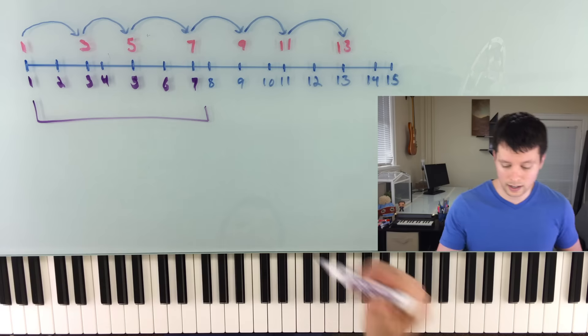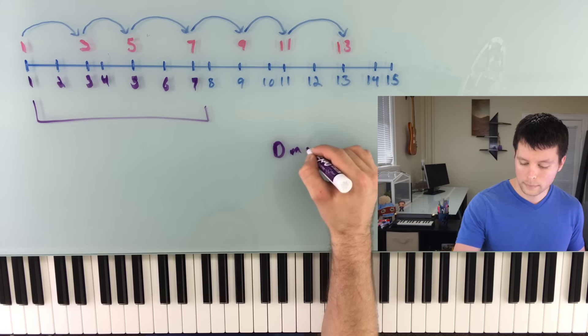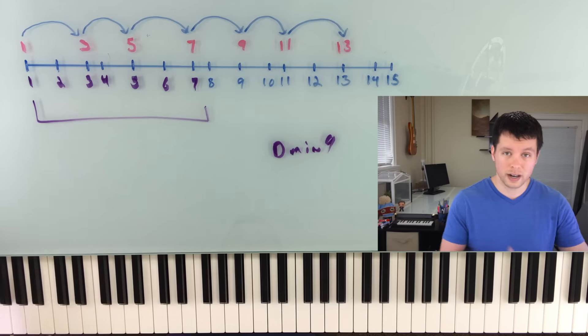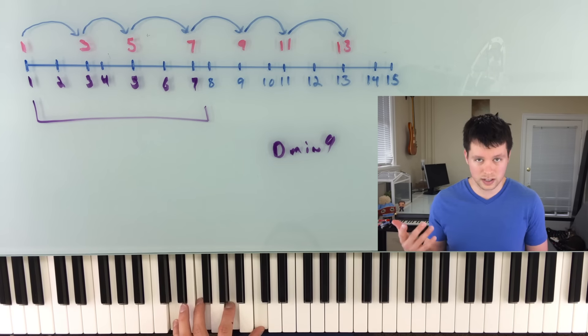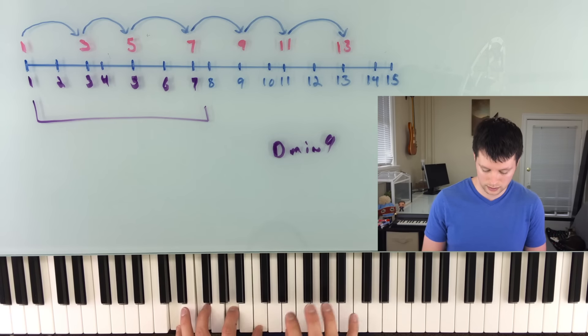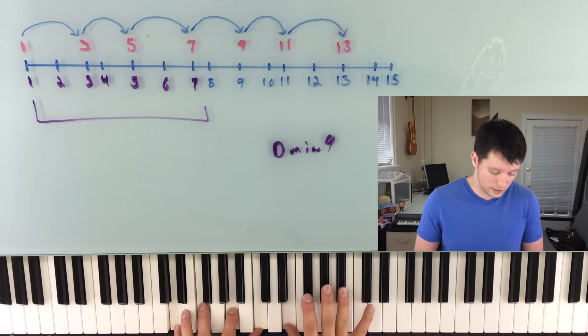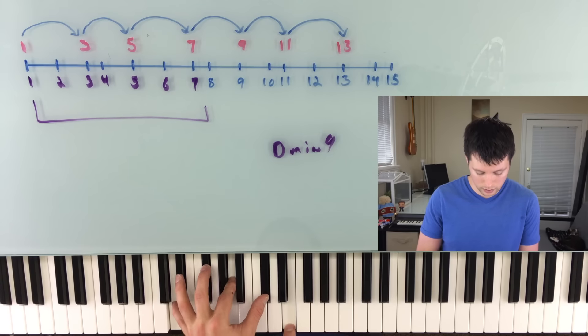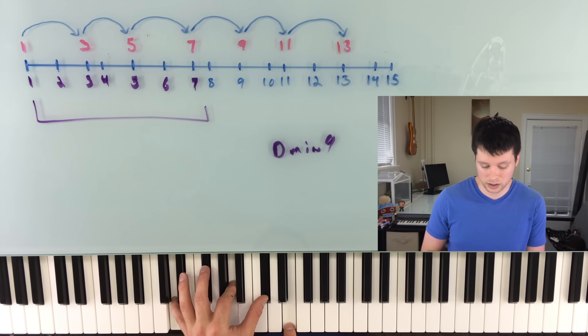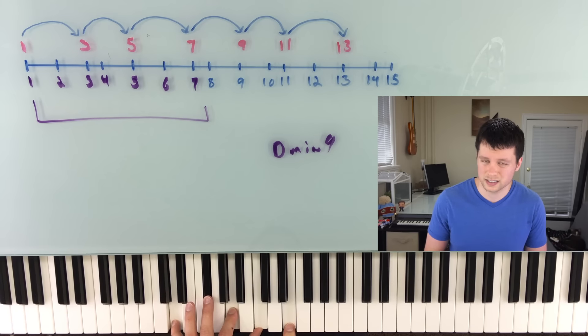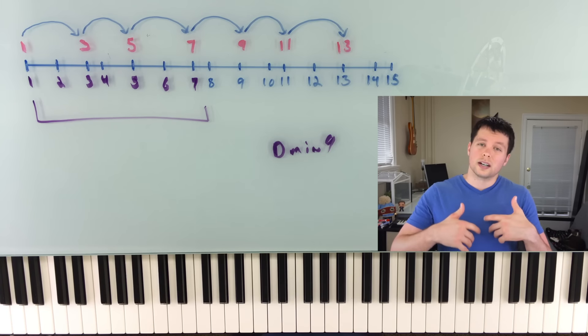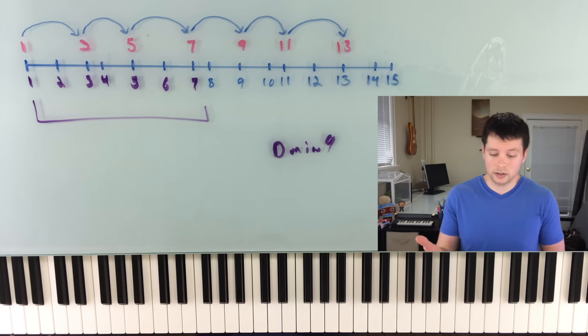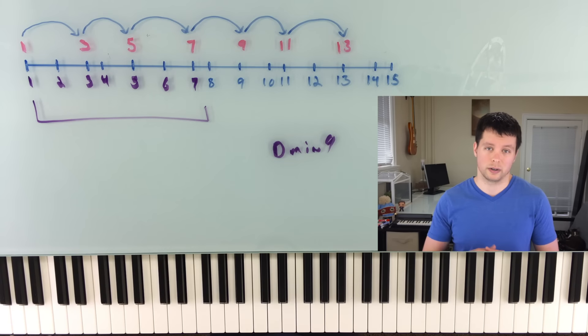So for example, if I wanted to do a D minor nine chord, I'd play a D minor seven, that's the core part of the chord, and then I would just stick a nine on there, which in the case of D would be the note E. If I wanted to do a D major nine chord, I have a D major seven now, but the nine doesn't change. I wanted to do a D dominant nine, same thing, that nine is still in the same place. And the same would be true for an 11th or a 13th or whatever.